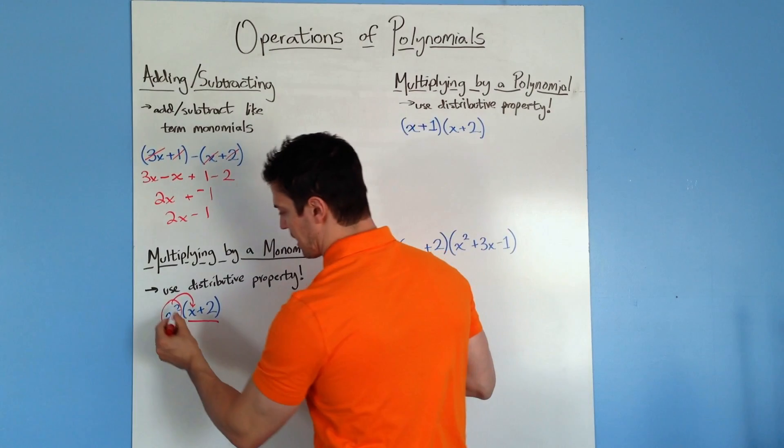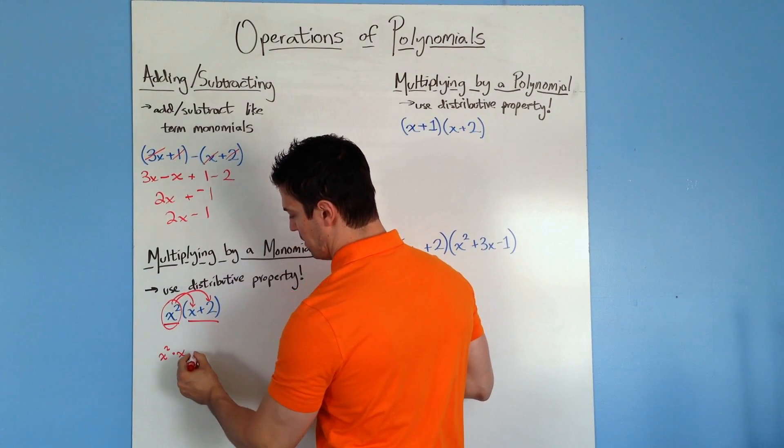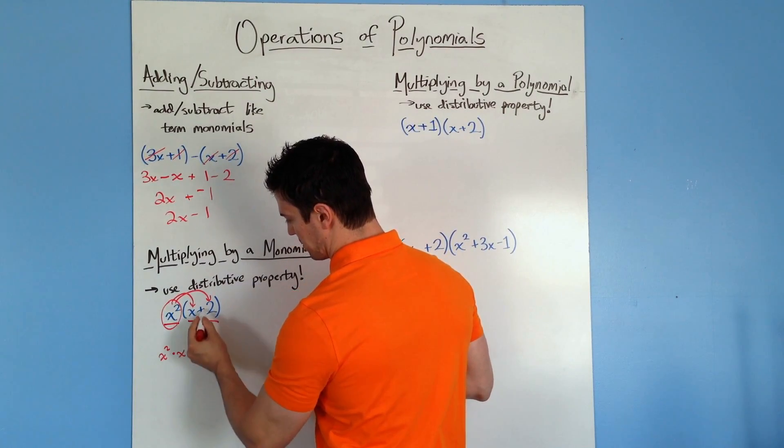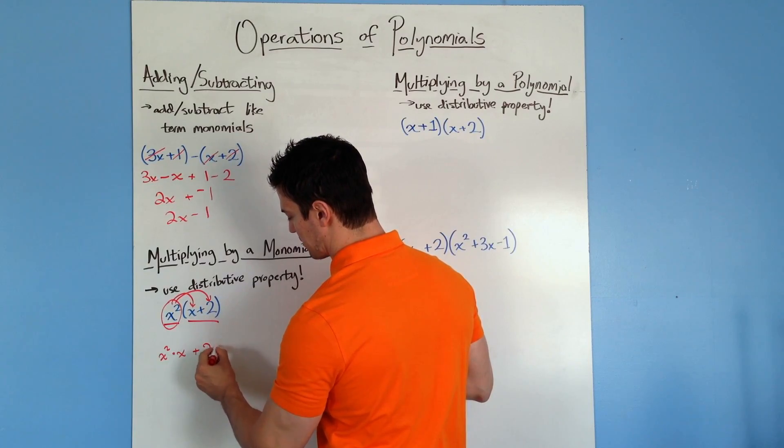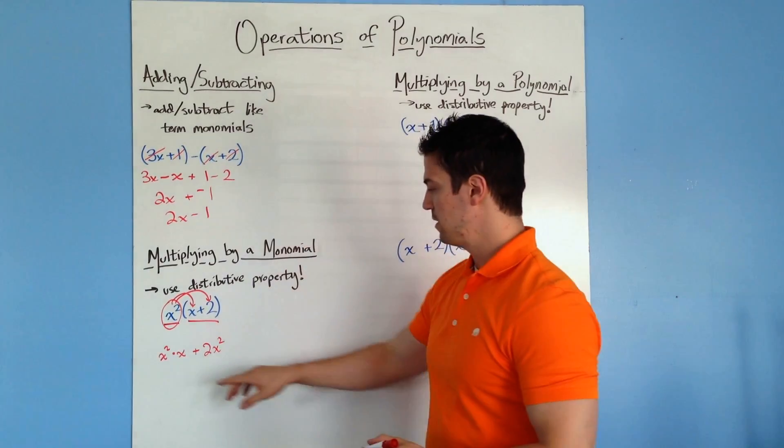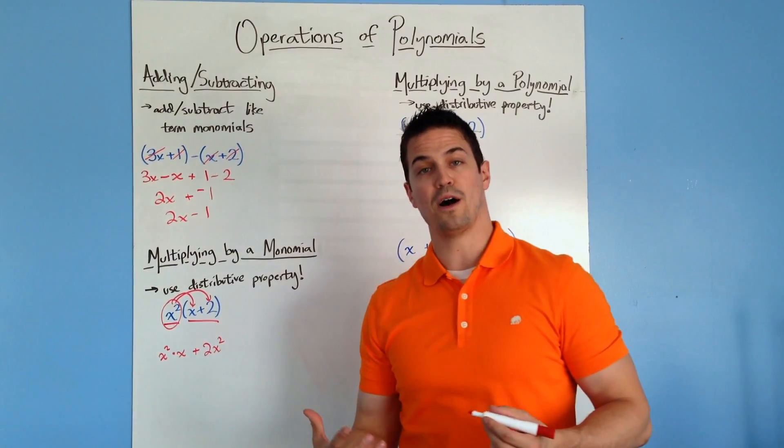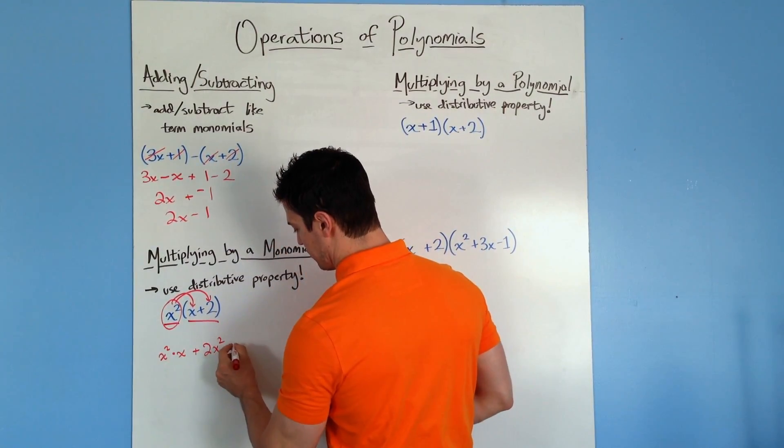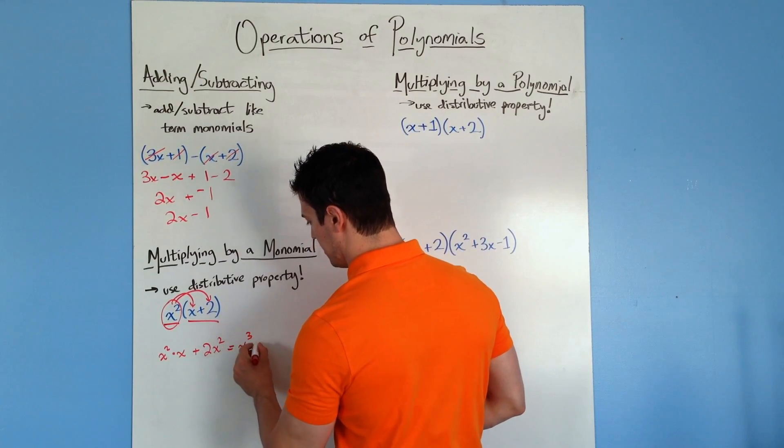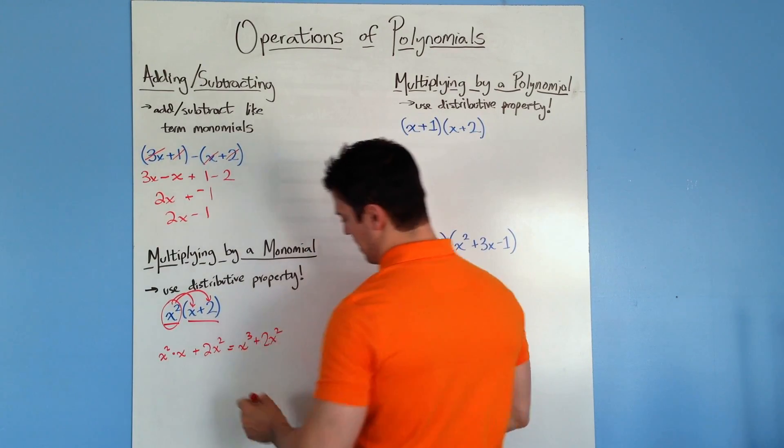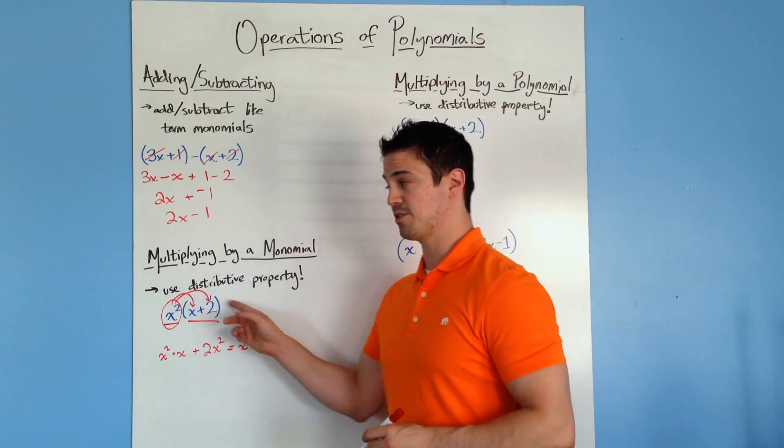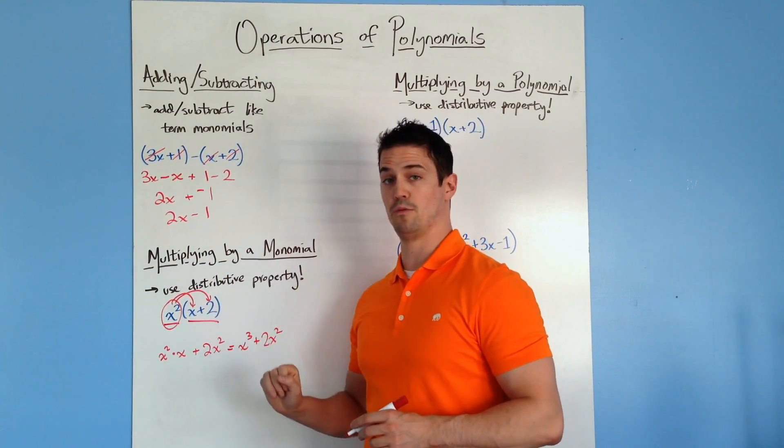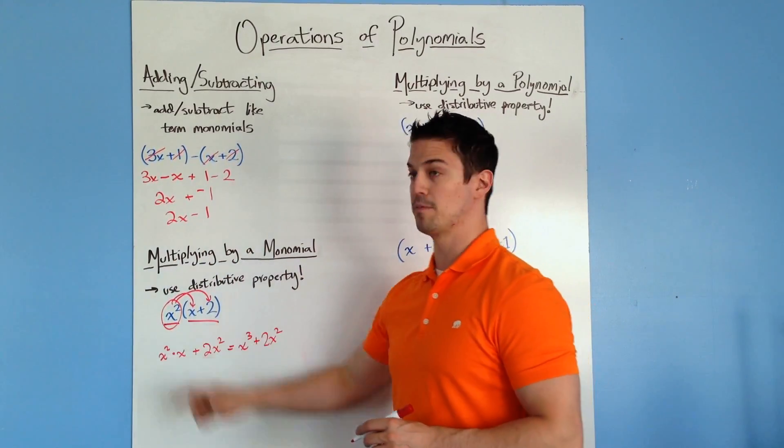Then I'm going to take this x squared again and multiply it by this term, the 2. So then I'm going to do plus 2x squared. Now, based on our rules for multiplying of powers, we know that we need to add the exponents here. So it should be x to the third plus 2x squared to have it simplified. And then you have the answer for multiplying by a monomial. So it's a polynomial times a monomial.